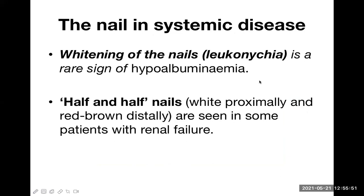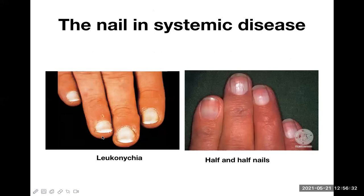Whitening of the nail, known as leukonychia, is a rare sign of hypoalbuminemia, though sometimes even normal people can have nail whitening with normal albumin levels, so it is not a very important sign. Half-and-half nail — white proximally and red-brown distally — is seen in some patients of renal failure.